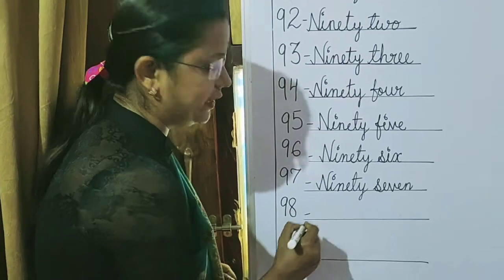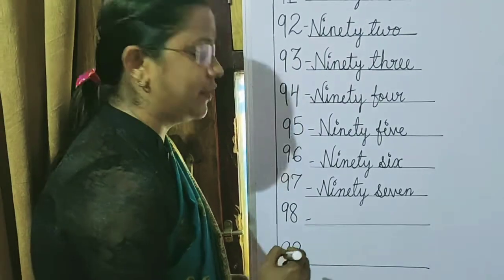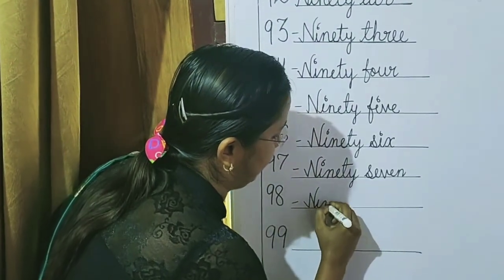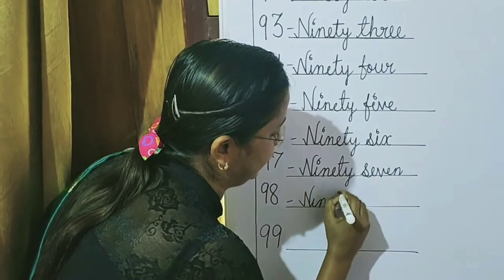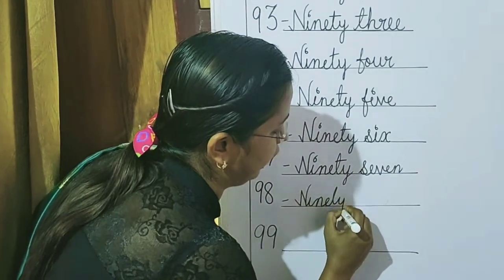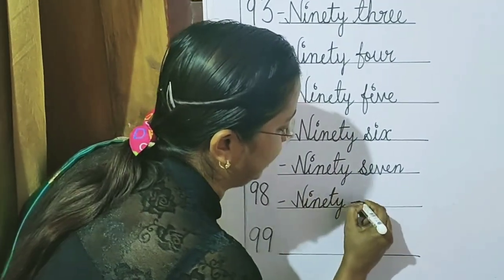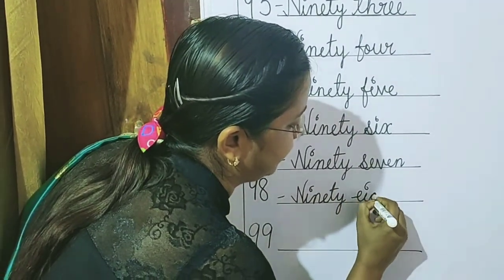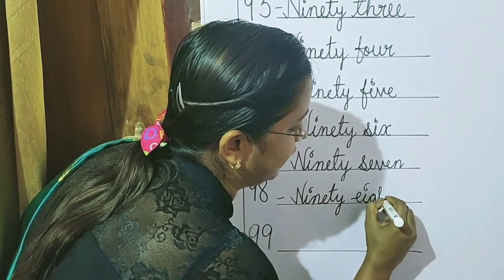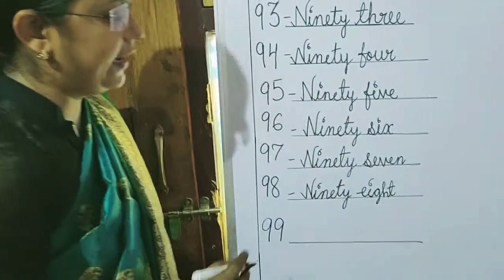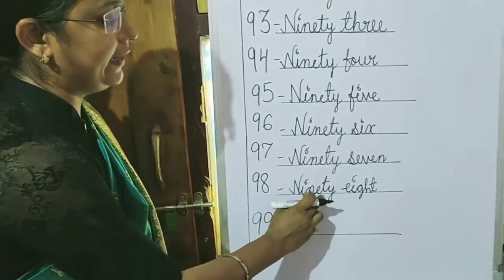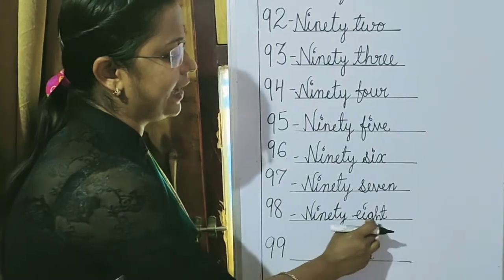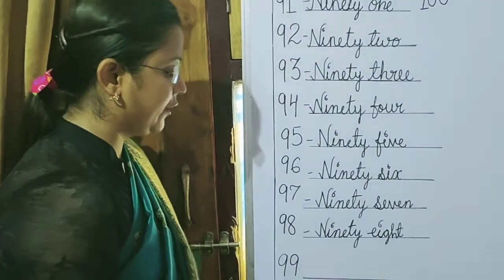After 97, 98. Very good. N-I-N-E-T-Y for 90. Then, 8 — E-I-G-H-T. N-I-N-E-T-Y plus E-I-G-H-T gives us 98.